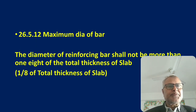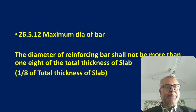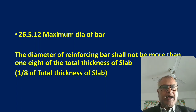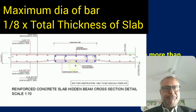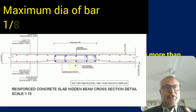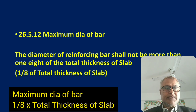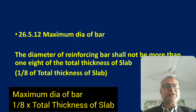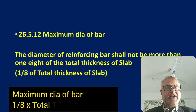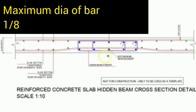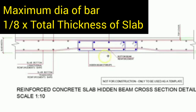Regarding maximum bar diameter: the diameter of the reinforcement bar shall not be more than one-eighth of the total thickness of the slab. For example, if the total thickness of the slab is 5 inches (125 mm), divide by 8 — the bar diameter should always be less than one-eighth of the total thickness of the slab from bottom to top.